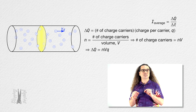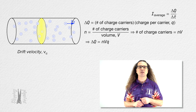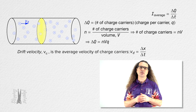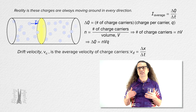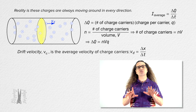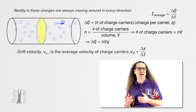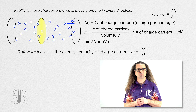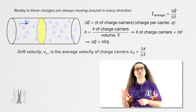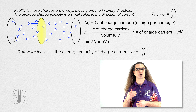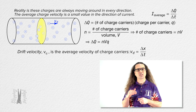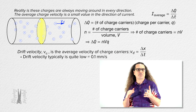This brings us to the concept of drift velocity, V sub d. Drift velocity is the average velocity of the charge carriers in a current-carrying wire. The charge carriers in the wire are always moving even when there is no current; it's just that when there is no current, the average velocity of the charge carriers is zero. The addition of an electric potential difference across a wire changes the average velocity from zero to a small value in the direction of the current. In most wires, the drift velocity is quite low — something like one-tenth of a millimeter per second.